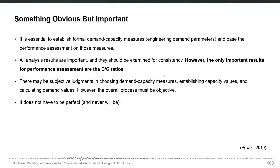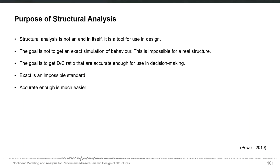The important results for performance assessment are DC ratios in the form of displacements or forces, which tell us about structural performance. We define each component's properties and capacities for IO, LS, and CP. In PERFORM3D software, up to five performance levels can be defined, not just the three standard ones. ASC 41 primarily addresses three performance levels: IO, LS, and CP. The non-linear model should be as close to real structural behavior as possible.